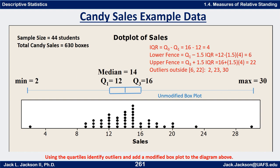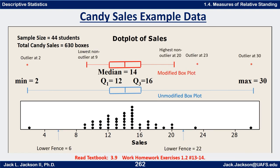Here's our modified box plot drawn in red. The lower fence was 6, and anything below that — the value 2 — gets an asterisk. The lowest non-outlier was 9, so that's where we draw the lower whisker. The upper fence is 22, so 23 gets an asterisk and 30 gets an asterisk — a couple of overachievers and one underachiever. The highest non-outlier is 20, so that's where we draw the upper whisker.